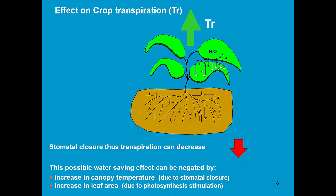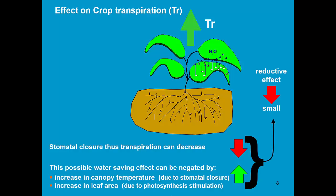This means a lower relative humidity and as such a higher transpiration. Due to the higher CO2 concentration, we might also have bigger leaves with more stomata. So the reduction in transpiration due to partial stomatal closure might be partly undone by the increase in canopy temperature and leaf area. The combined effect results only in a rather small reduction of crop transpiration.